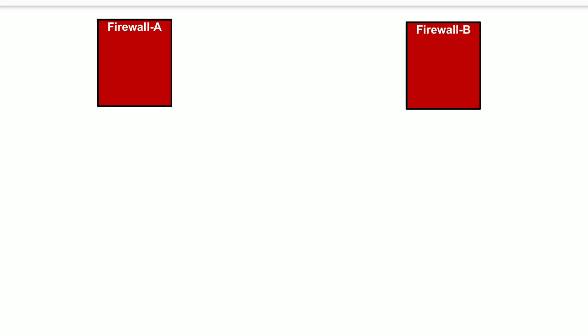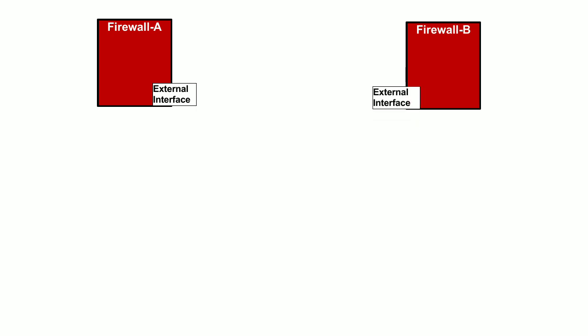This is the first security gateway, Firewall A, and this is the second security gateway, Firewall B. Firewall A has an external interface towards Firewall B, and similarly Firewall B has an external interface configured towards Firewall A. The network in between these two firewalls has a number of network devices, all managed by your service provider, so you need not worry about the routing between these two external interfaces — it is performed by your internet service provider.